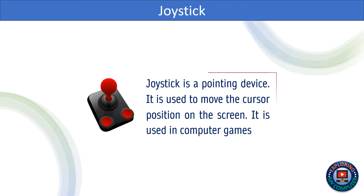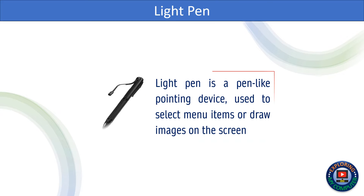A joystick is a pointing device used to move the cursor position on the screen. It is commonly used in computer games. A light pen is a pen-like pointing device used to select menu items or draw images on the screen.